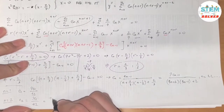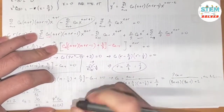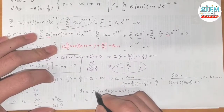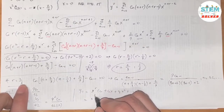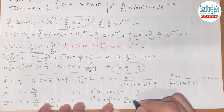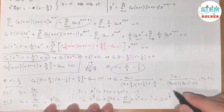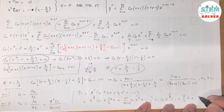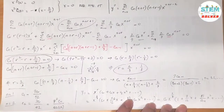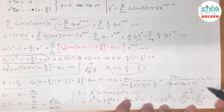So c_1 equals 9c_0 over 12, which simplifies to 3c_0/4. And c_2 equals 9c_1 over 40, which gives 9c_0 over 56. Then y_1 equals x to the 2/3 times c_0 times (1 plus 3/4 x plus 9/56 x squared plus dot dot dot), after factoring out c_0.